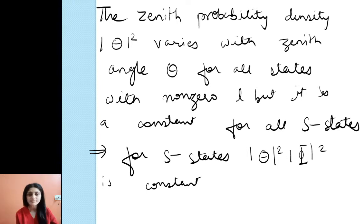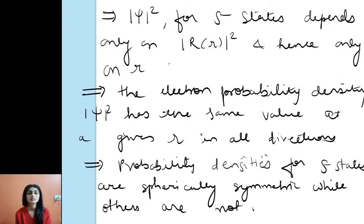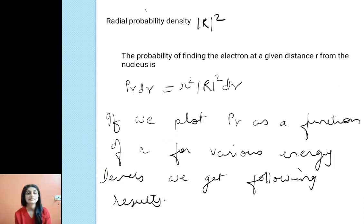For S states, |Θ|² is constant and |Φ|² is constant, and |psi|² depends on r, theta, and phi. Since theta and phi components are constant, the probability |psi|² depends only on R. So the electron probability density |psi|² has the same value at a given R in all directions — probability densities for S states are spherically symmetric, while others are not.